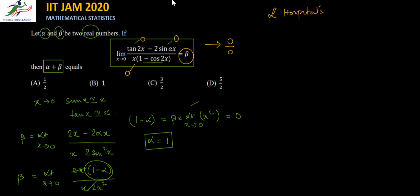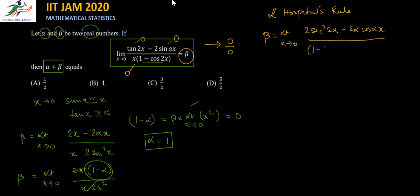That means we will differentiate the numerator and the denominator. So beta equals limit x tending to 0. Differentiating the numerator gives: the differential of tan 2x is 2 sec² 2x, minus 2 sin(alpha x) differentiates to 2 alpha cos(alpha x). Differentiating the denominator: the differential of x is 1, giving 1 times (1 minus cos 2x) plus x times 2 sin 2x.